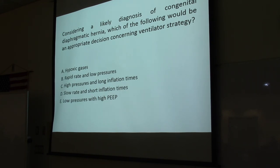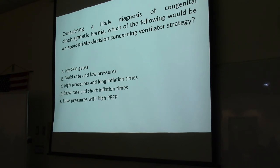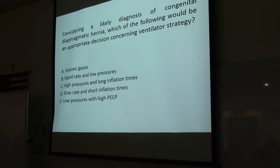For ventilator strategies with CDH: Do you want to maintain hypoxic gases? No — low O2 causes pulmonary vessels to constrict. What about rapid rate and low pressure? Yes, that is appropriate. High pressure with long inflation times? No. A slow rate with short inflation times? No — if you allow CO2 to climb with a slow rate, that constricts pulmonary vessels, and we want to keep them dilated. Low pressure with high PEEP? No — you don't want high pressure inside the lungs. So the answer is B: rapid rate and low pressure.